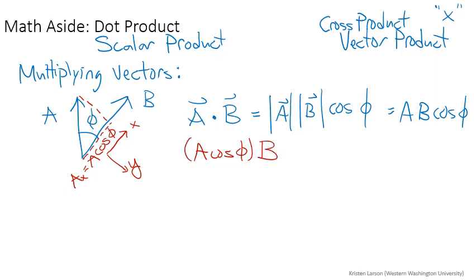If you rotate the coordinate system, you can also show for yourself that this is also the same as A times B cosine phi. Since those are all just numbers, scalars, you can write them in any order you want. So it's the vector times the component of the other vector that is along the first vector.